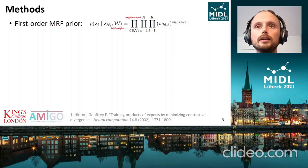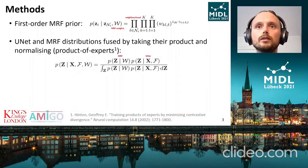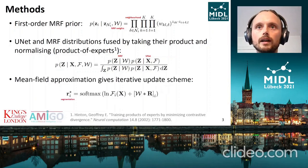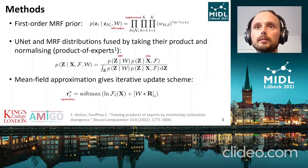To deal with the intractable posterior we get from combining the U-Net and the MRF, we use a product of experts model, which fuses the two distributions by taking their product and normalizing. Skipping some of the details, by making a mean field approximation, we get an iterative update scheme for the posterior over a segmentation.